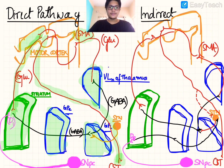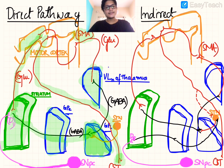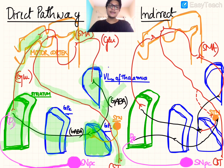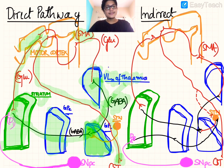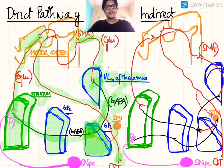The striatum, when excited, sends inhibitory signals to the globus pallidus internus. Normally the GPI is inhibiting the ventrolateral nucleus of thalamus via a GABAergic pathway. Once the striatum inhibits the GPI, the ventrolateral nucleus of thalamus is disinhibited because the GPI is no longer sending GABAergic output.